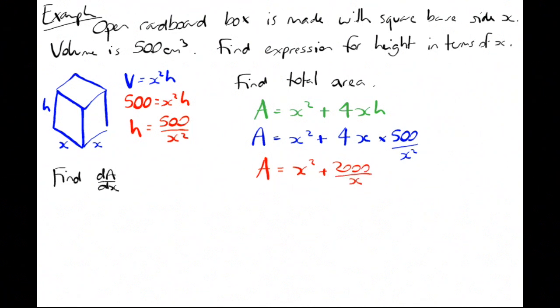Find dA/dx and solve dA/dx = 0. If I want to differentiate that, I'm going to have to rewrite that A with the x instead of being at the bottom of a fraction as an index. So it's going to be A = x² + 2000x⁻¹. The minus because it's underneath, and the 1 because it only has the power of 1.